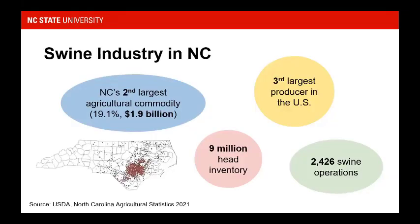I want to set the stage by talking about the significance of the swine industry in North Carolina. It's our second largest agricultural commodity at almost $2 billion. We're the third largest producer in the U.S., with a 9 million head inventory pushing out almost 19 million finished pigs per year and about 2,400 swine operations. Swine operations are mainly concentrated more towards the coast.